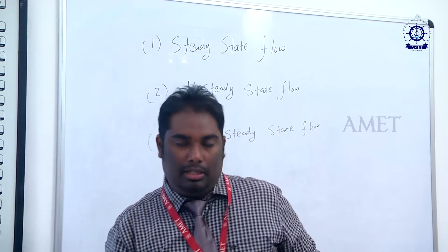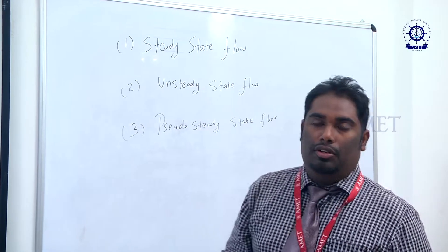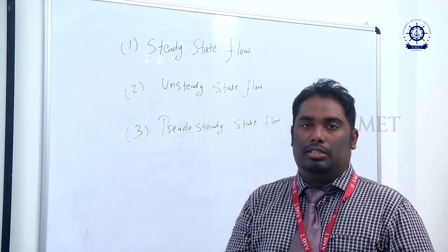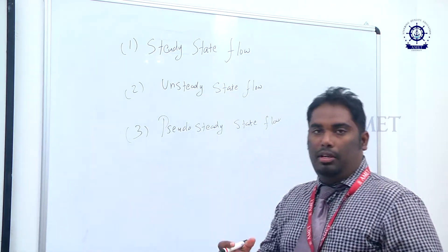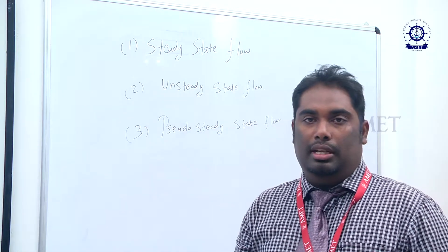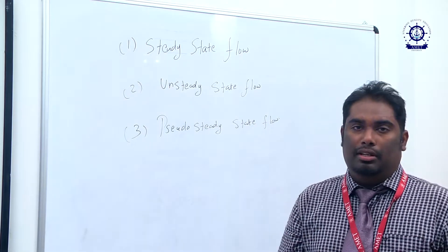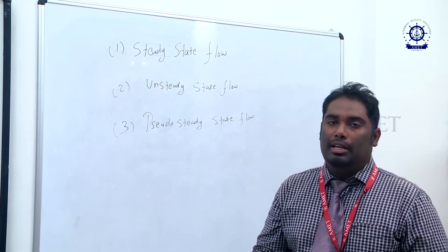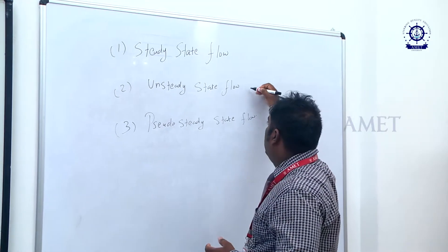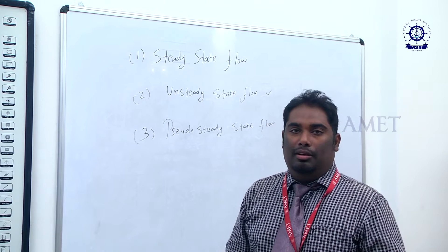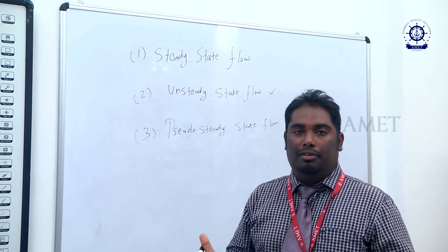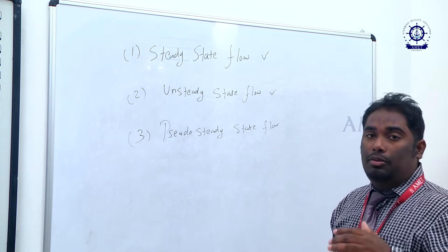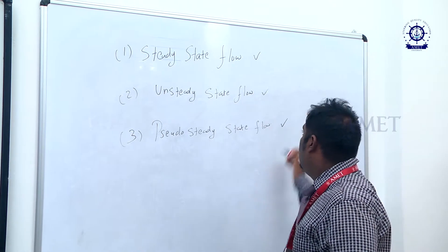Before going into these three state flows, we should know the order in which they occur once the reservoir starts to get exploited. Once production starts, the engineer will drill a well and start to produce oil from subsurface to surface. Once after opening the well, you will immediately experience unsteady state flow. Then, because of the water pressure maintaining very high, that will make you experience steady state flow. And finally, the reservoir life will end with pseudo steady state flow.